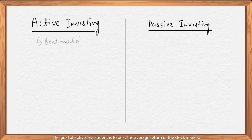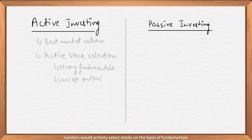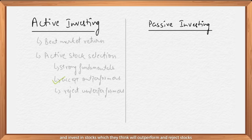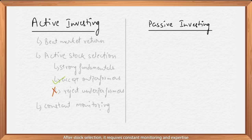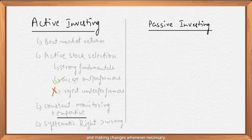The goal of active investment is to beat the average return of the stock market — to achieve a return higher than what a broad market index like Nifty 50 would achieve. Investors actively select stocks on the basis of fundamentals and invest in stocks which they think will outperform, and reject stocks which they believe will not perform as well. After stock selection, it requires constant monitoring and expertise to switch these stocks as the fundamentals change. This is not gambling, but a dedicated and systematic approach to monitoring portfolio performance and making changes whenever necessary. The objective is to be right more times than wrong.